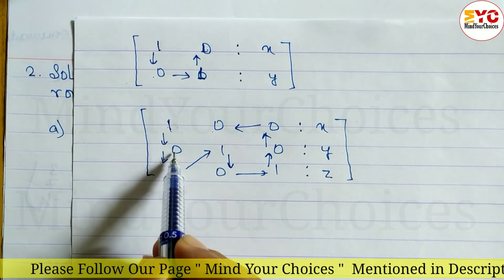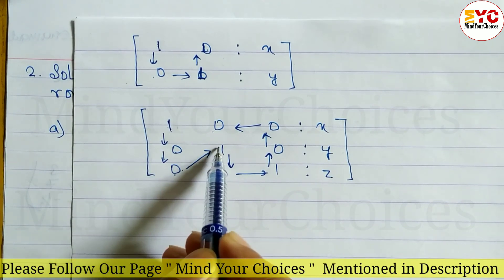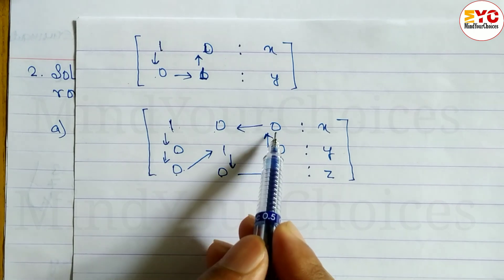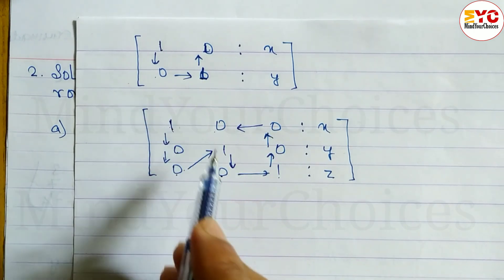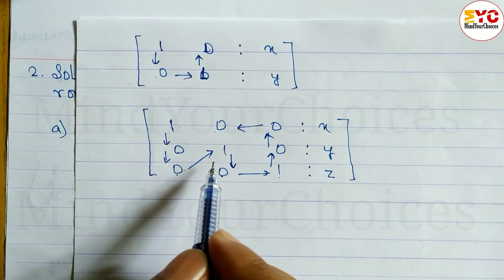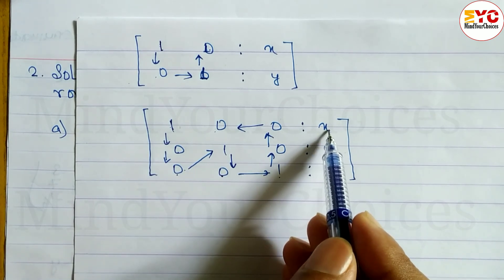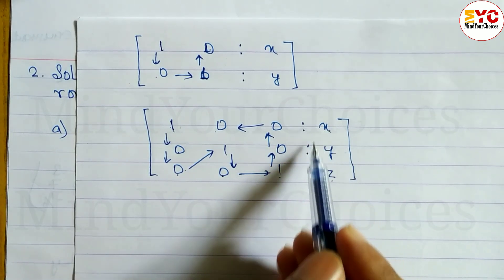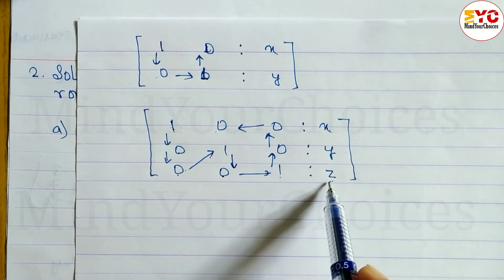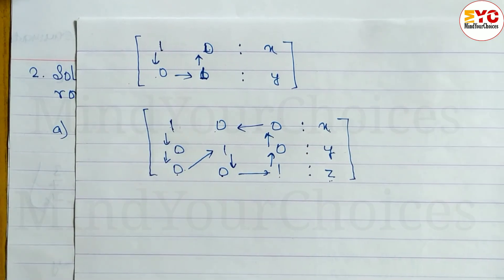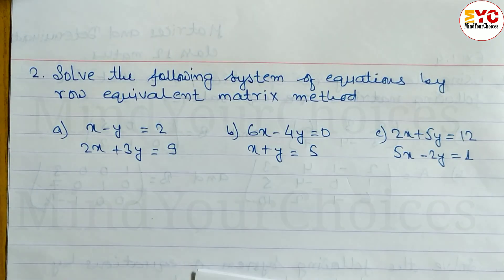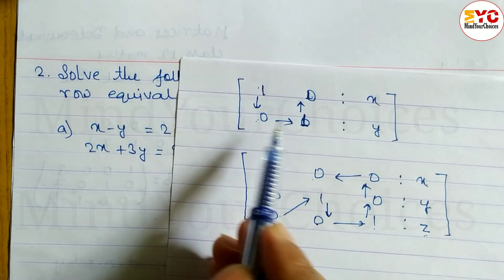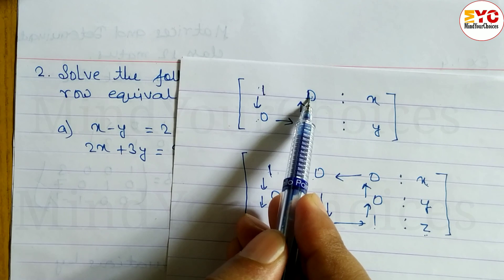This is the rule: first we have to find out the 1, then 0, then 0, then 0. Then again we have to find out 1, 0, 0. Then we have to find out 1, 0, 0. Now for the 2×2 matrix with 2 equations, we need: 1, 0, 0, 1, 0, 0.